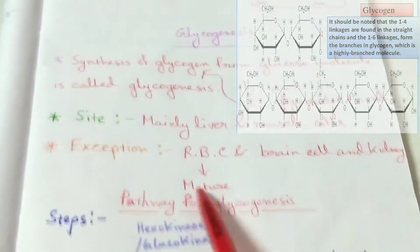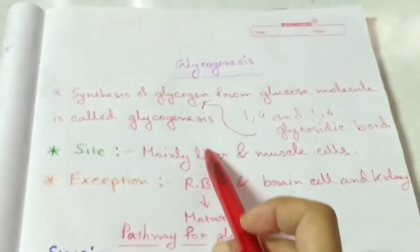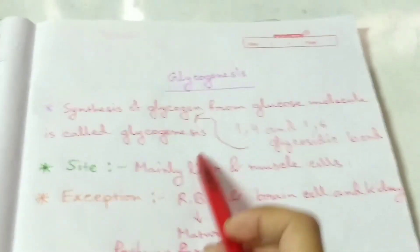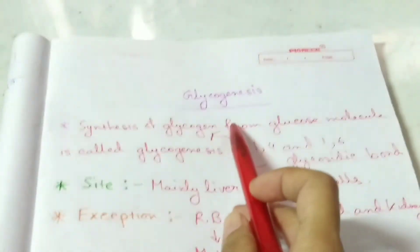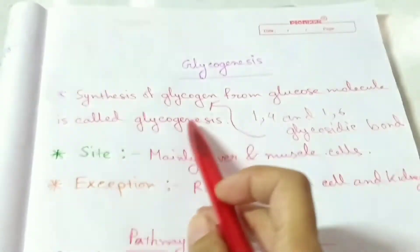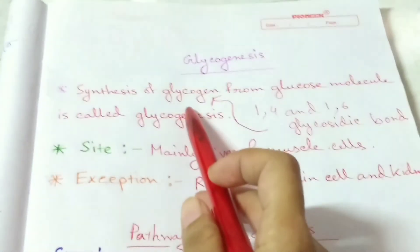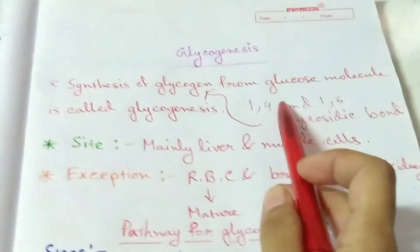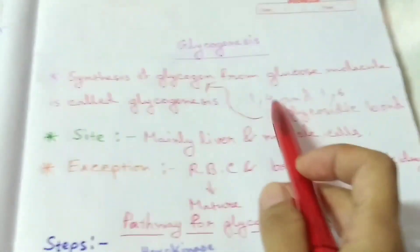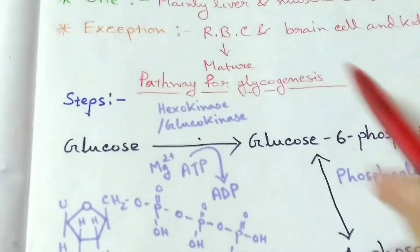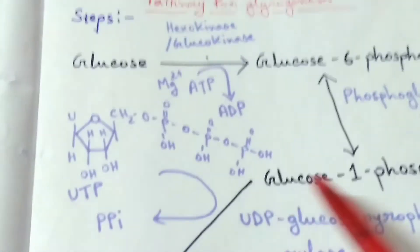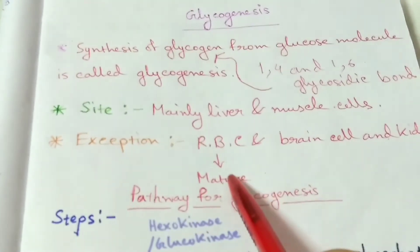Here is all about the glycogenesis — glycogen is formed from glucose, covering the steps and the site.